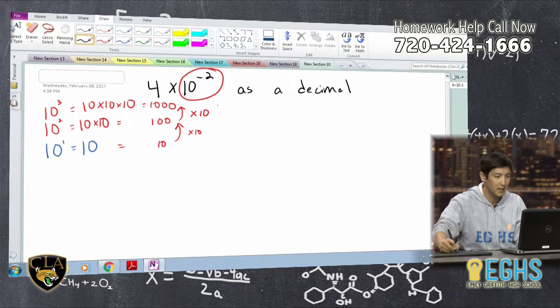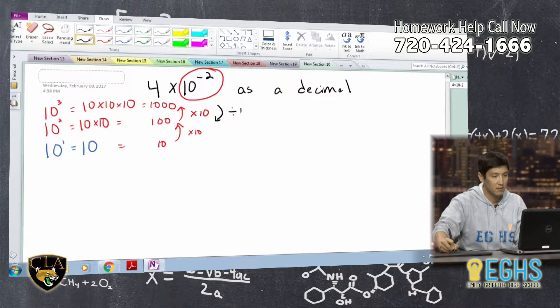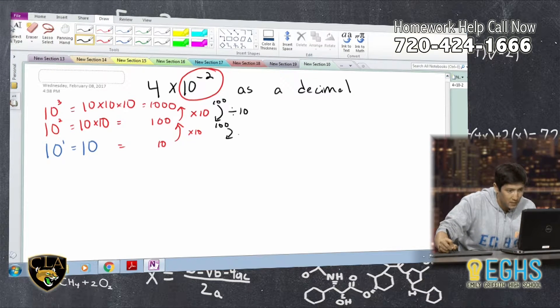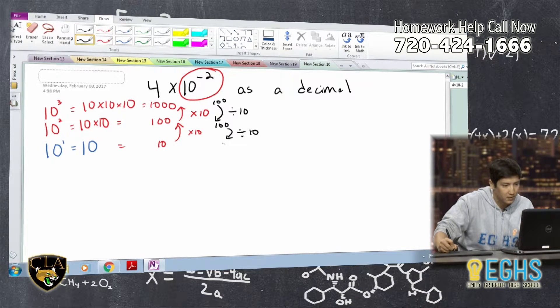Well, 1,000 divided by 10, if that makes sense, is going to bring us to 100. And then 1,000, or sorry, 100 divided by 10 is going to bring us to 10.